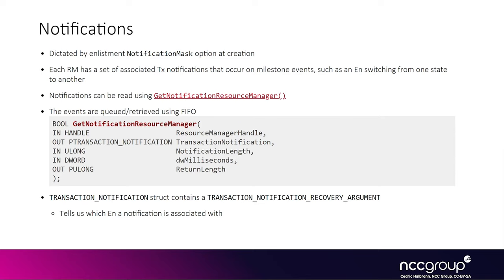Whether or not the notification will actually be queued for the enlistment is dictated by a mask called the notification mask field, which was passed to the create-enlistment function when you created the enlistment. It basically says which types of state changes you are interested in for that enlistment. By playing around with this mask, you can find the best mask to use to receive as many notifications as possible, so you can see what is actually happening in KTM from userland.